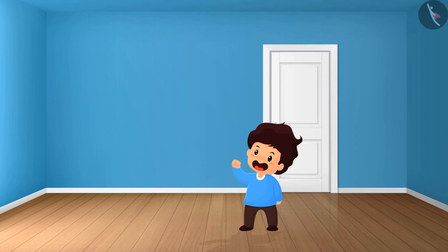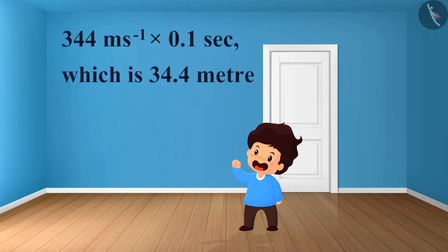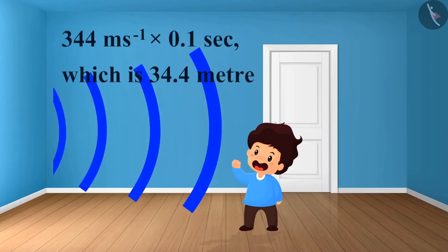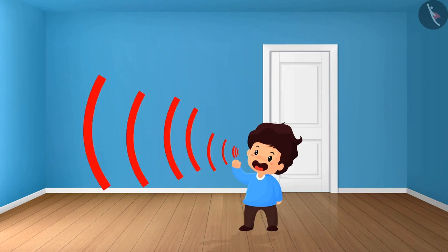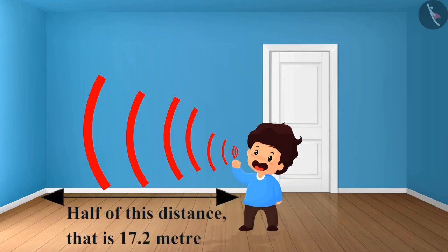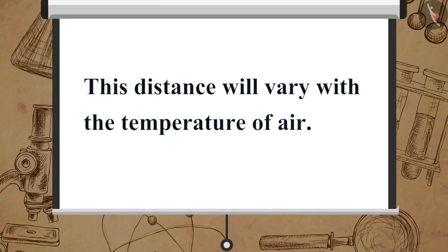The distance travelled by the sound from its source to the reflecting surface and back to the listener should be at least 344 meter per seconds multiplied by 0.1 second, which is 34.4 meter. So, to receive a distinct echo, the minimum distance between the source of sound to that of the reflected surface should be at least half of this distance, that is 17.2 meter. This distance will vary with the temperature of air.